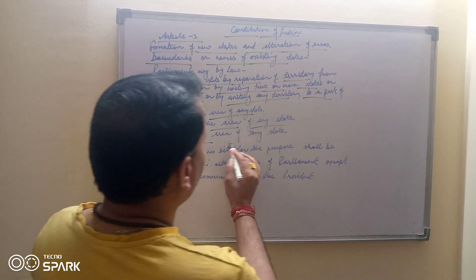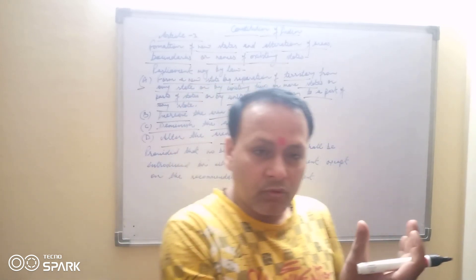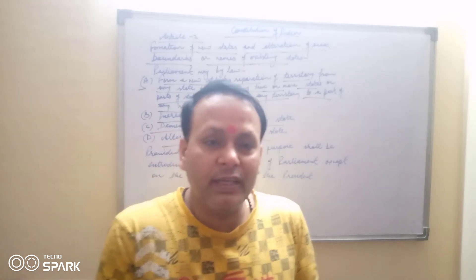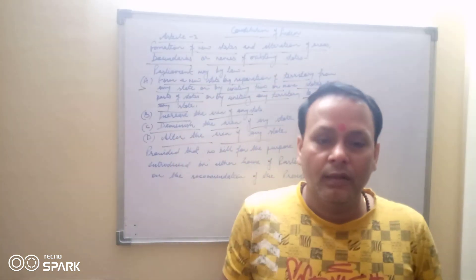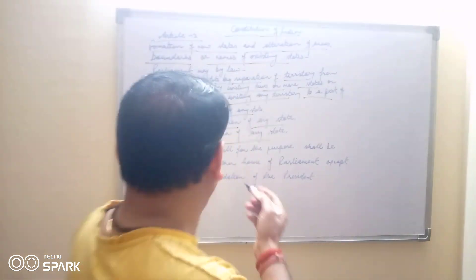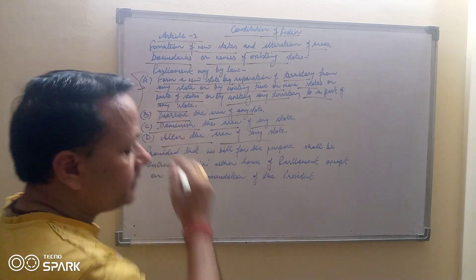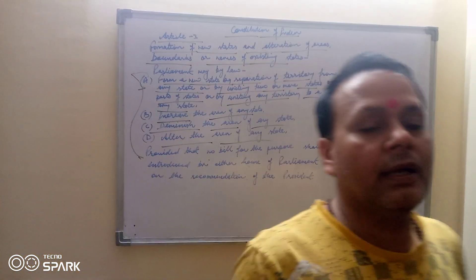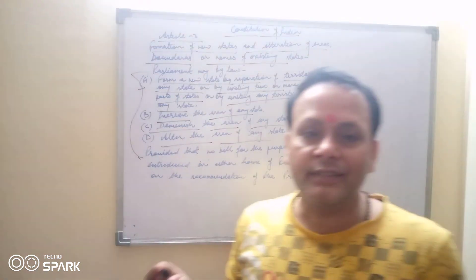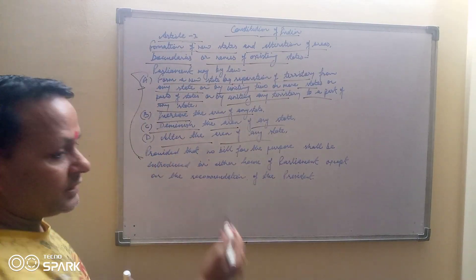Alter the area of any state — jabir si baat hai, kya chahiye kisi area ko badaayenge ya kam karenge, dono sthitiyon mein kya hoga? Parivartan hoga, changing aayega. To ye saare provisions Article 3 ke clauses A, B, C, D mein diya gaya hai — kis tarike se rajya ke baare mein sansad kanoon bana sakti hai.